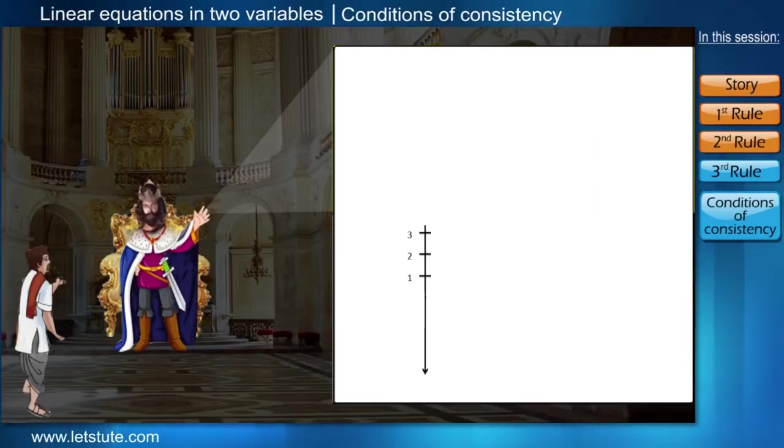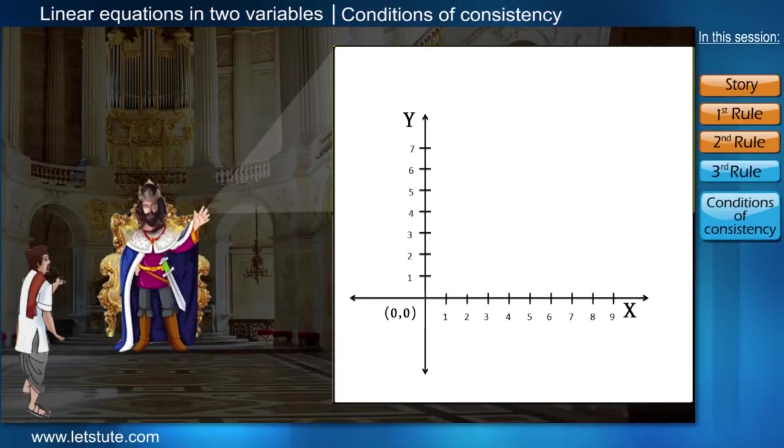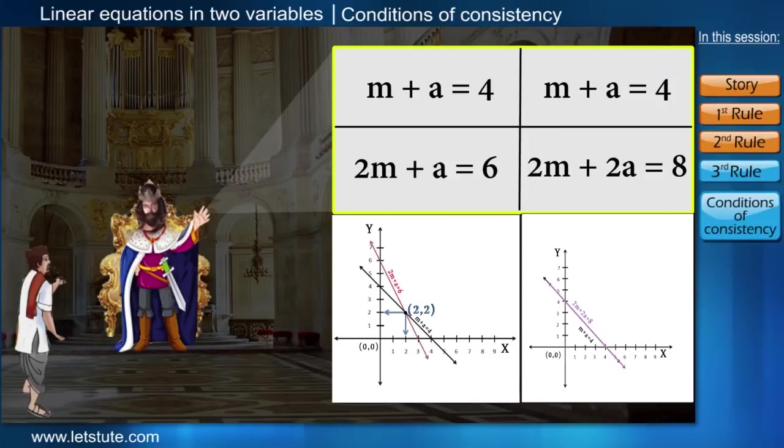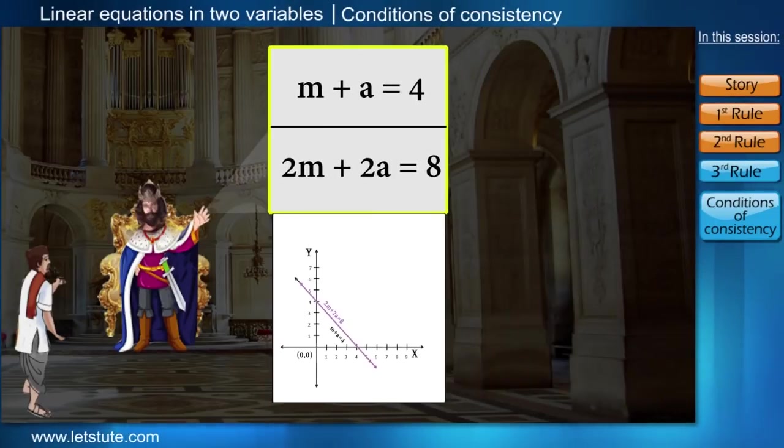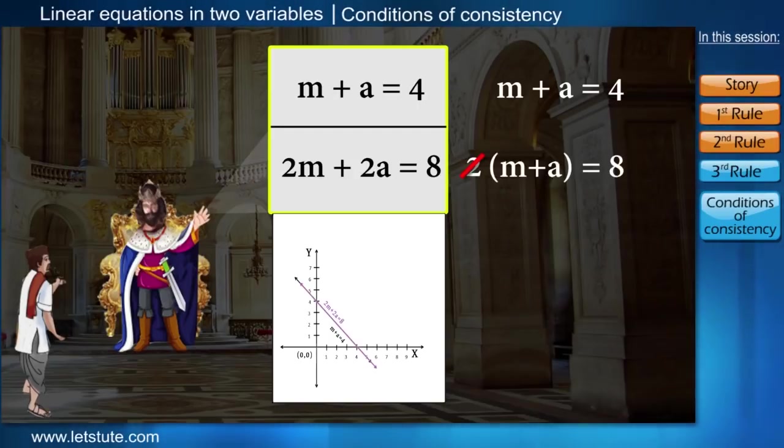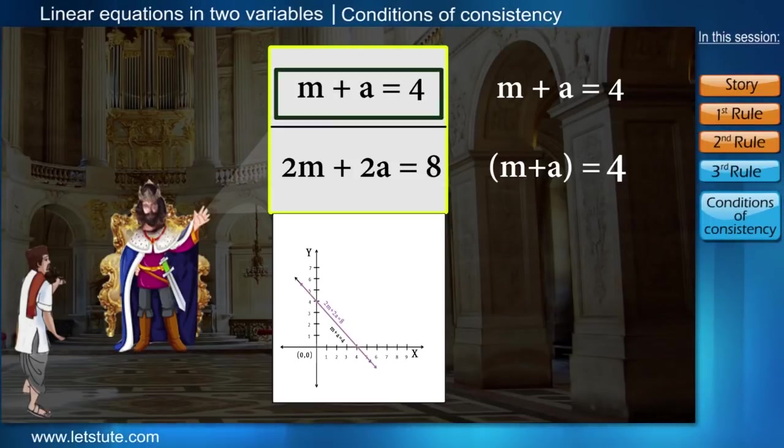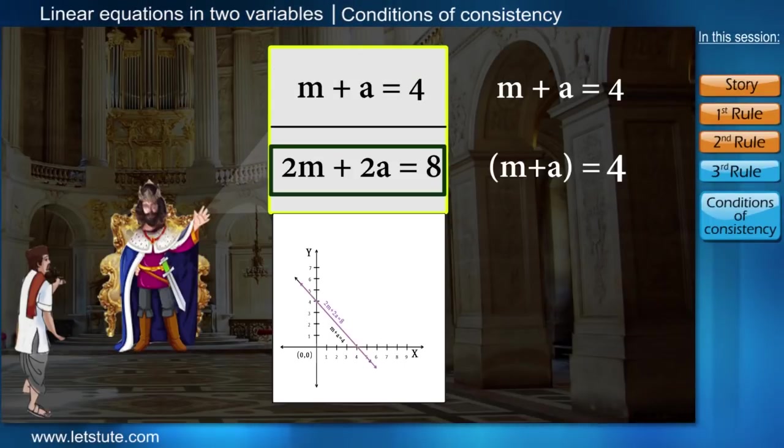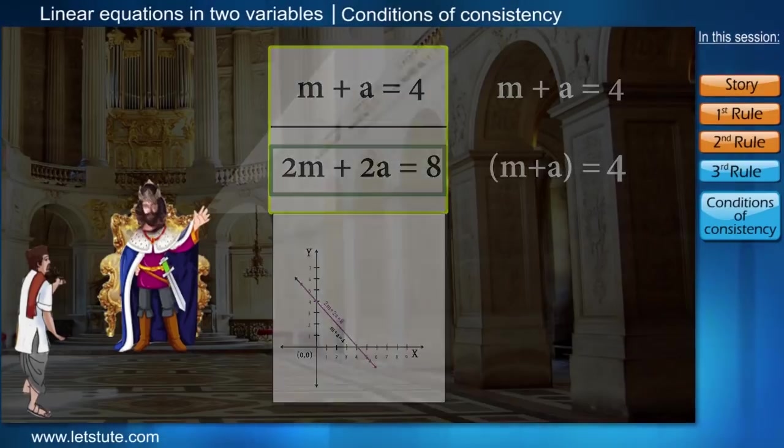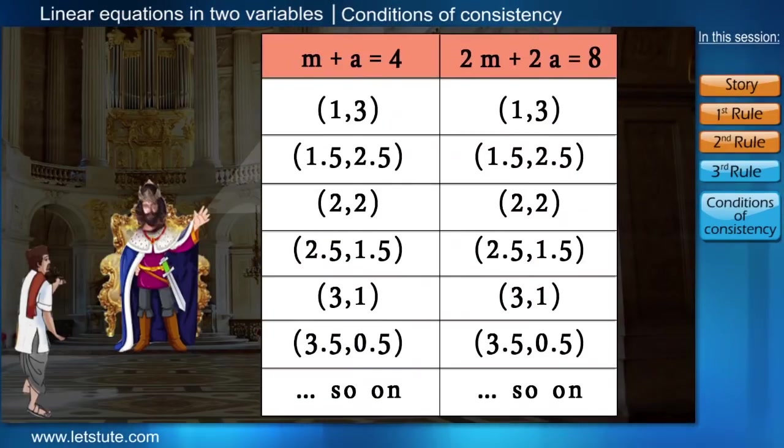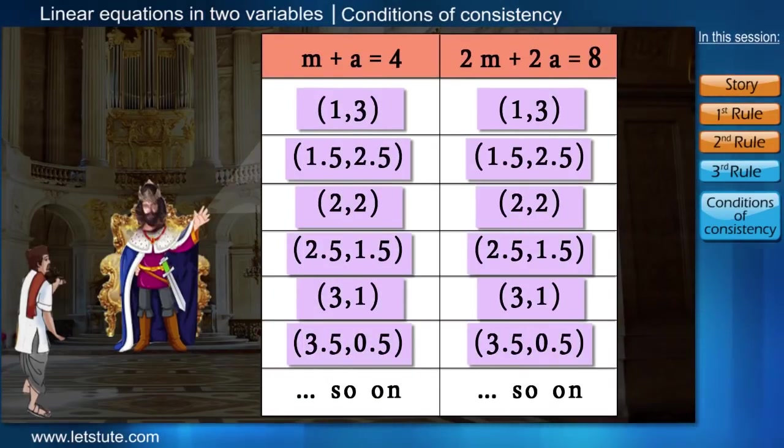That person started plotting some points and lines on the paper and showed to the king as both lines were overlapping and said, your majesty, this equation would give you the same line when you take the number 2 common. Here, whatever price you fix for the equation m plus a equal to 4 will remain same for 2m plus 2a equal to 8. You can try it for any combination. And that was true.